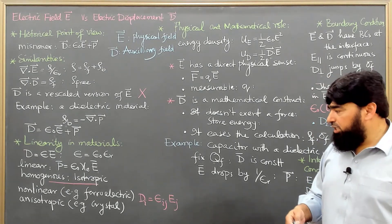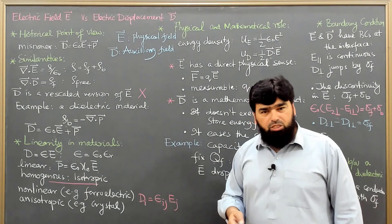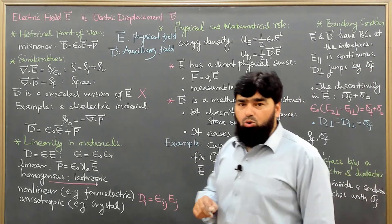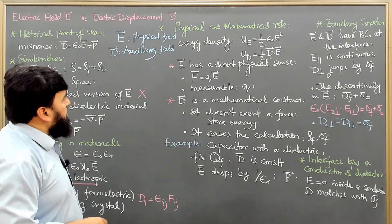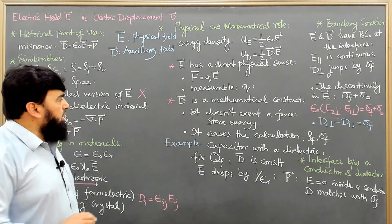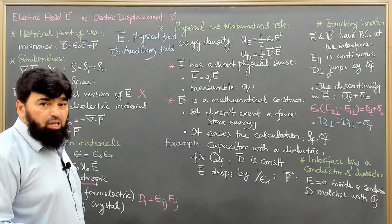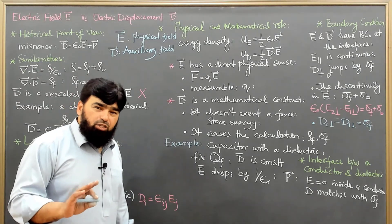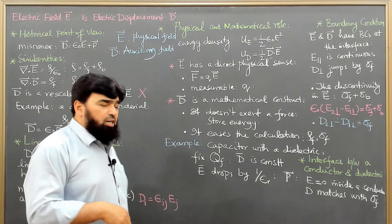Usually we encounter non-linear materials like ferroelectric materials, anisotropic materials like crystals, and heterogeneous materials. Homogeneous material is almost ideal. E stores energy inside a material while D does not store energy directly. E has a physical sense — it is measurable, it can exert force on a charge, and we can measure it on a test charge. D is just a mathematical tool, a mathematical construct, which does not exert any force on a charge and cannot store energy directly.